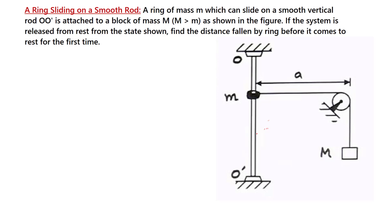Hello friends, so this problem is about a ring sliding on a smooth rod. We have a ring of mass m, and this ring is attached to another mass capital M through a string. This string passes over a fixed pulley, and the ring can slide on a smooth vertical rod.